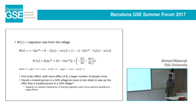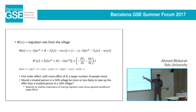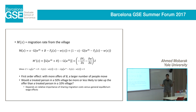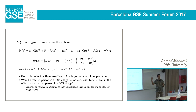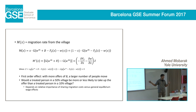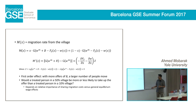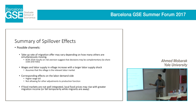Let me summarize the possible channels of spillovers. One is that the take-up rate of the migration offer may depend on how many other people are getting the offer. Wages and labor supply in the village will increase with a larger labor supply shock. There will be effects on the labor demand side — in the short run I'm just looking at what happens to the cultivators' wage bill and profits; in the long run they might change their production technology. And we'll also look at food price effects.